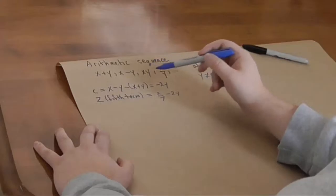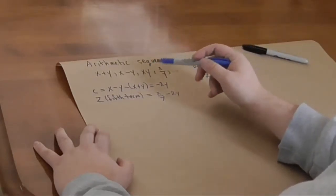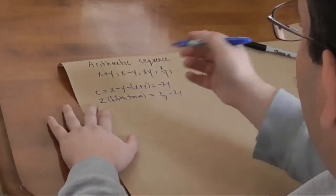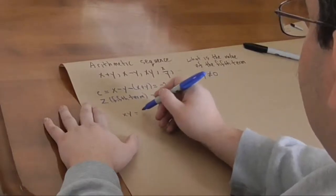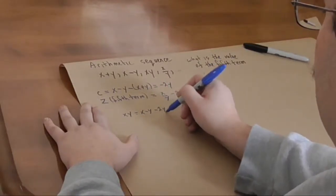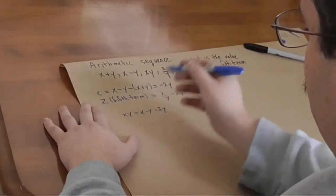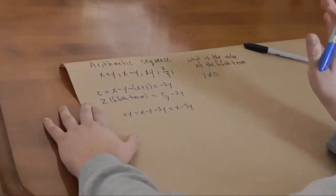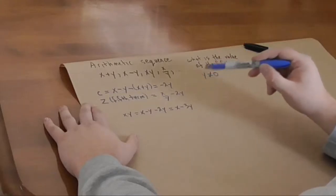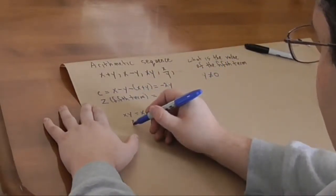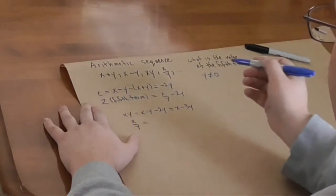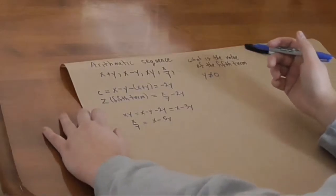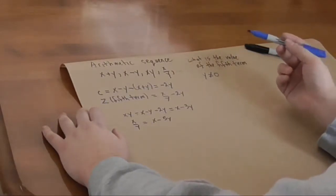Instead, I thought I would do something else. I can write xy and x divided by y in terms of the second term. So, we know that xy equals x minus y minus 2y. That's c there, that minus 2y, which is actually x minus 3y. Likewise, x divided by y is x minus 3y minus 2y. So, that means x over y equals x minus 5y.